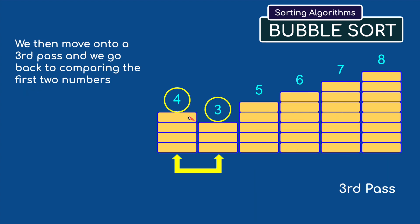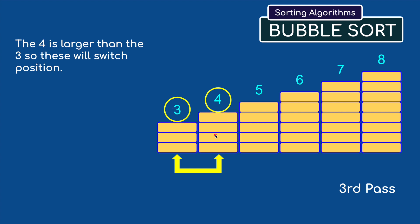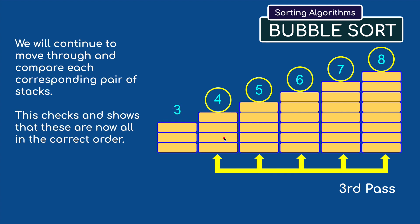So a third pass should swap the four and the three into the correct order. We still need to go through the pass and check that these are in the correct order before we can call it a sorted finish stack. But that is basically how it works - we just swap pairs of blocks, pairs of numbers, until we get them in the correct ascending order. It might take several passes as you've just seen.